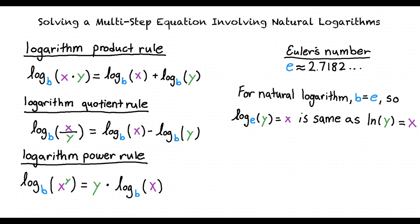Remembering the way that we can represent a logarithm in exponential form, we find that ln of y is equal to x is equivalent to e to the x is equal to y.